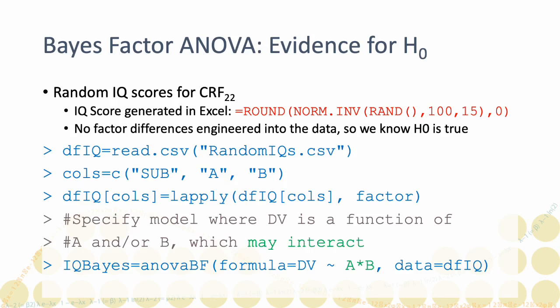That said, it is unlikely that all condition means are exactly identical, and in fact it turns out that the easy ANOVA analysis reports a significant interaction, p equals 0.01. Let's see what the Bayes factor ANOVA says about it.